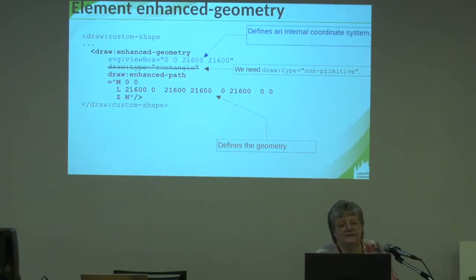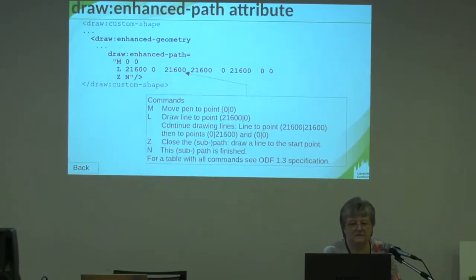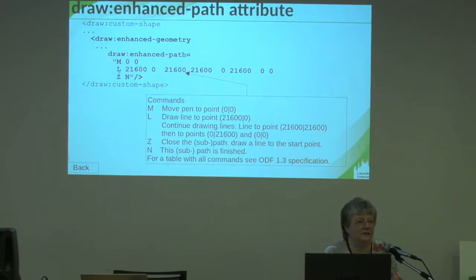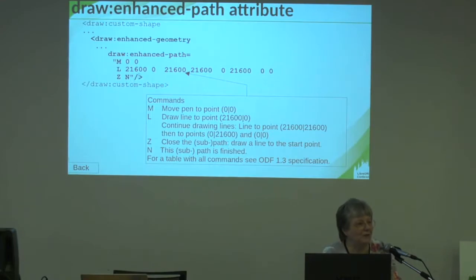Then we have an attribute 'enhanced path' that describes the geometry itself. It has commands with a single letter, and behind that in most cases coordinates. For example, M means 'move to' and sets the pen on point 0,0. We have L for 'line to' — and in this case not only one line but several. We have a command Z for closing — we do not need it for Formwork shapes — and N which says the path is finished. So for our curve, you need to know what commands to use to make a curve.